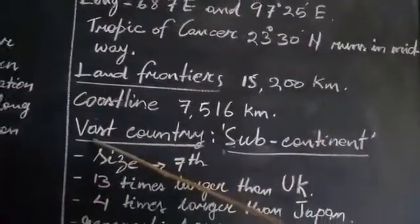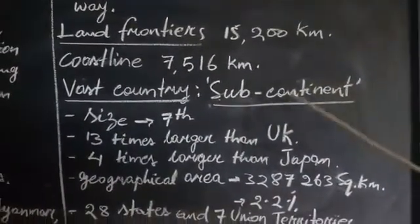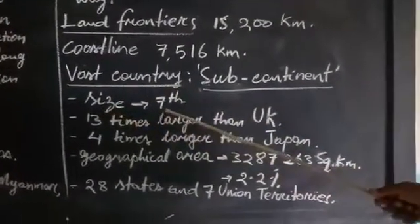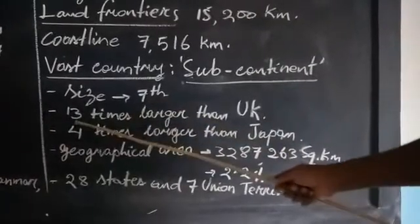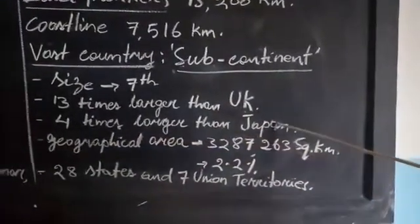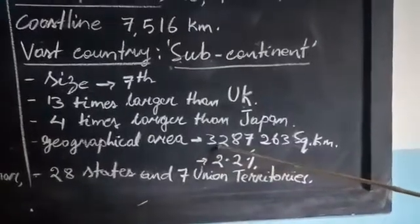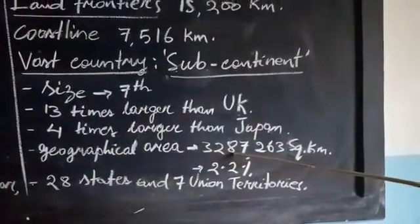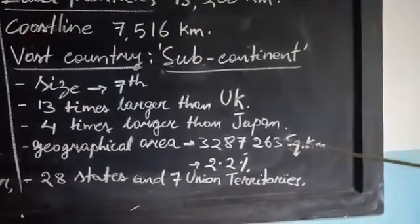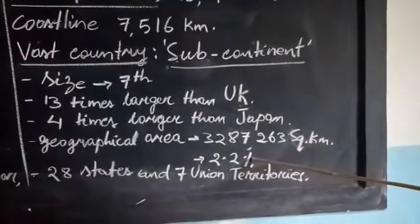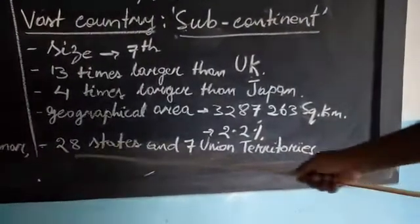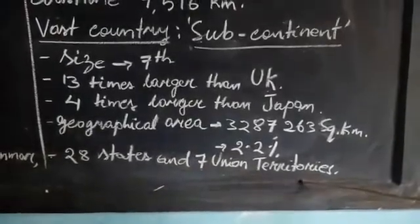We call India a subcontinent because it is a very vast country. Its size is seventh in the world, and it is 13 times larger than the United Kingdom and four times larger than Japan. The total geographical area is 3,287,263 square kilometers, which is 2.2 percent of the total geographical area of the world. At present we have 28 states in India and seven union territories.